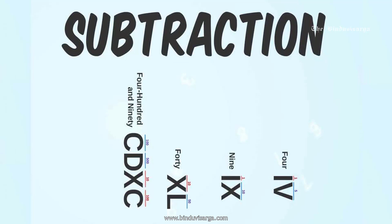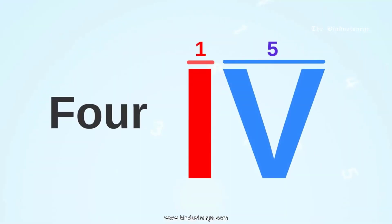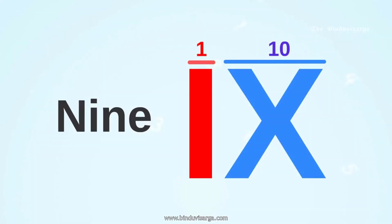Now we are going to look at subtraction. In these cases, the larger number does not go in front of the smaller number. For example, 4 — we have I before V, that means 1 before 5. Smaller number before the larger number means we subtract, so taking 1 from 5 gives us 4. Another example is 9: we have I that is 1, and X that is 10, so taking 1 from 10 gives us 9.